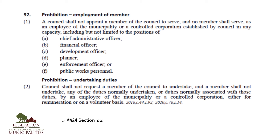There are a few specific additional limitations on the authority of council, or prohibitions, as listed in the Municipal Government Act. Section 92.1 is very clear that council shall not appoint a member of council to serve, and no member shall serve, as an employee of the municipality or a controlled corporation established by council in any capacity. This means council members cannot be hired as the CAO, financial officer, planner, development officer, enforcement officer, or public works personnel.